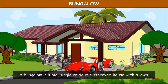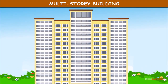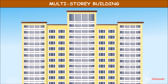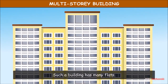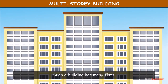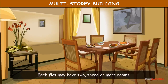A bungalow is a big single or double-storeyed house with a lawn. A multi-storeyed building has many flats. Each flat may have two, three or more rooms.